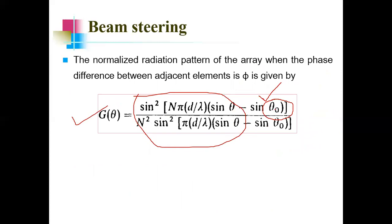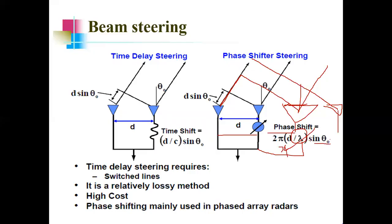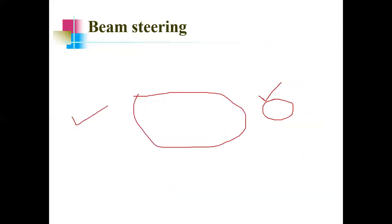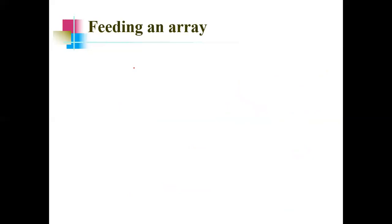Time delay steering is complicated because it requires switched lines, is more lossy, and costly. Therefore, phase shifter steering is preferred over time delay steering. These were the two beam steering methods.